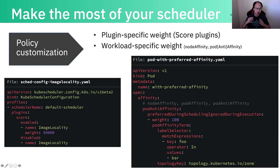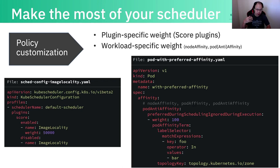This is what I call a plugin-specific weight because this weight is set in the plugins configuration context. There's another way to configure the weight, which is in the workload itself. Like in node affinity, pod affinity, and pod anti-affinity, there is a field called preferredDuringSchedulingIgnoredDuringExecution. There's also a weight for your pod to show your preference for the existing pods, either you want to co-exist or not co-exist with those kinds of pods. So basically there are two types: plugin-specific and workload-specific.